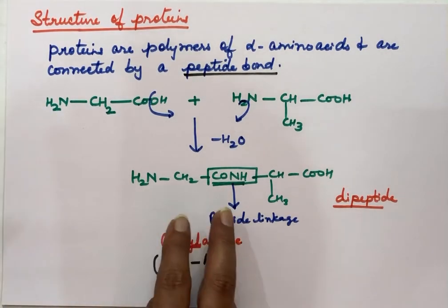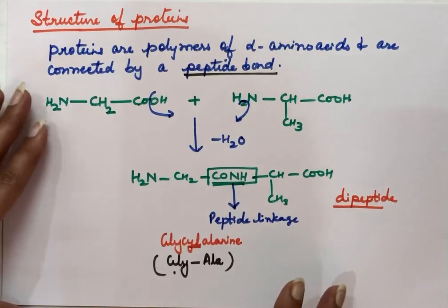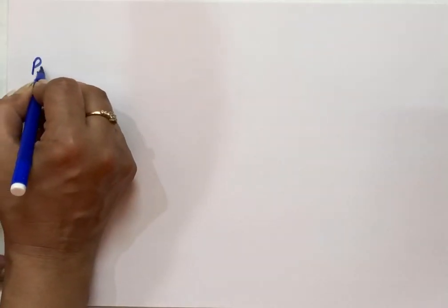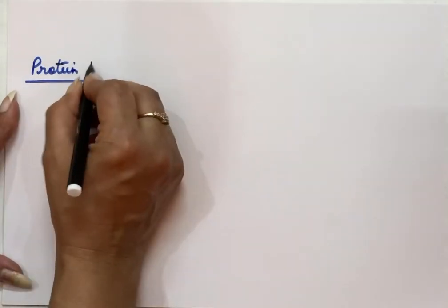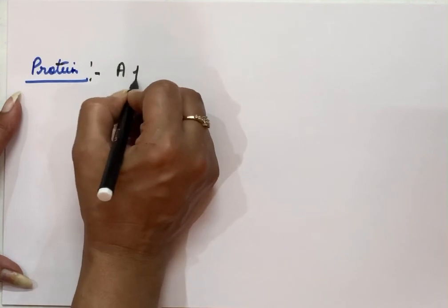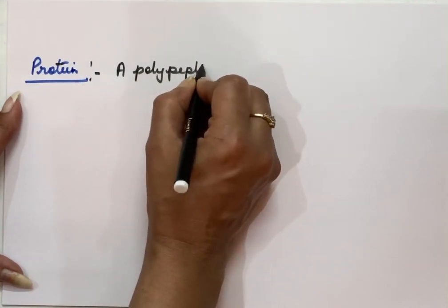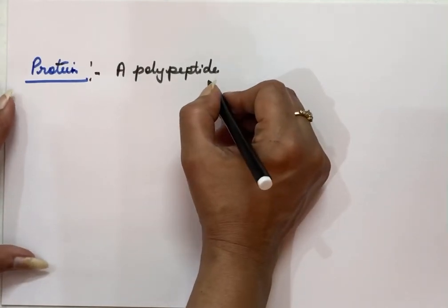If three amino acids link with each other, we get a tripeptide. If many amino acids condense this way, what we get is a polypeptide. So the linking of amino acids gives rise to a polypeptide.